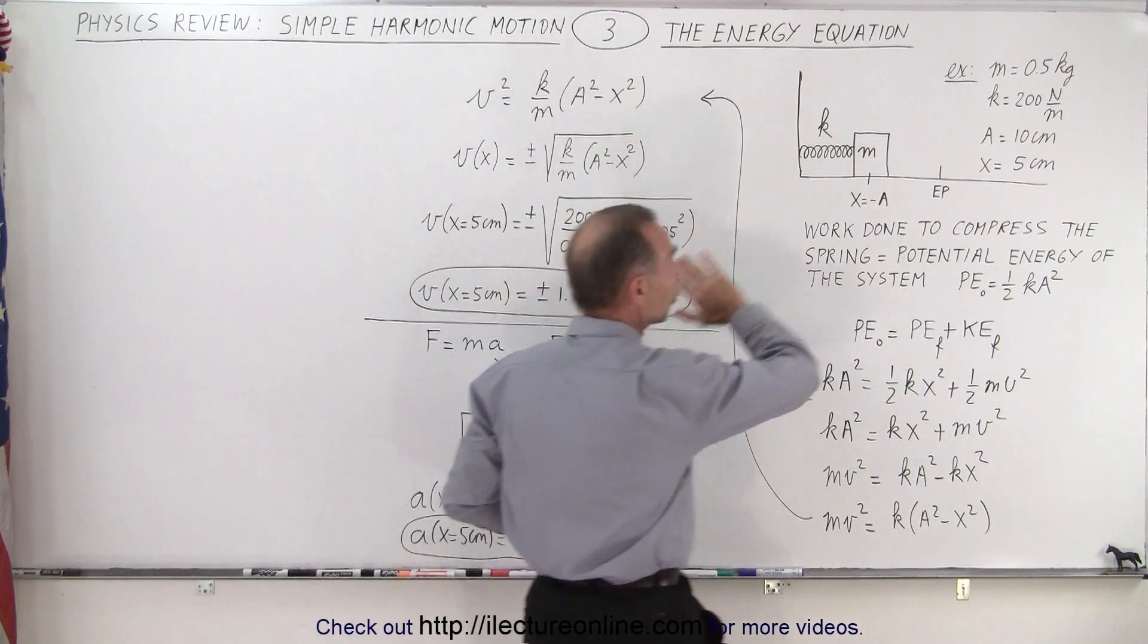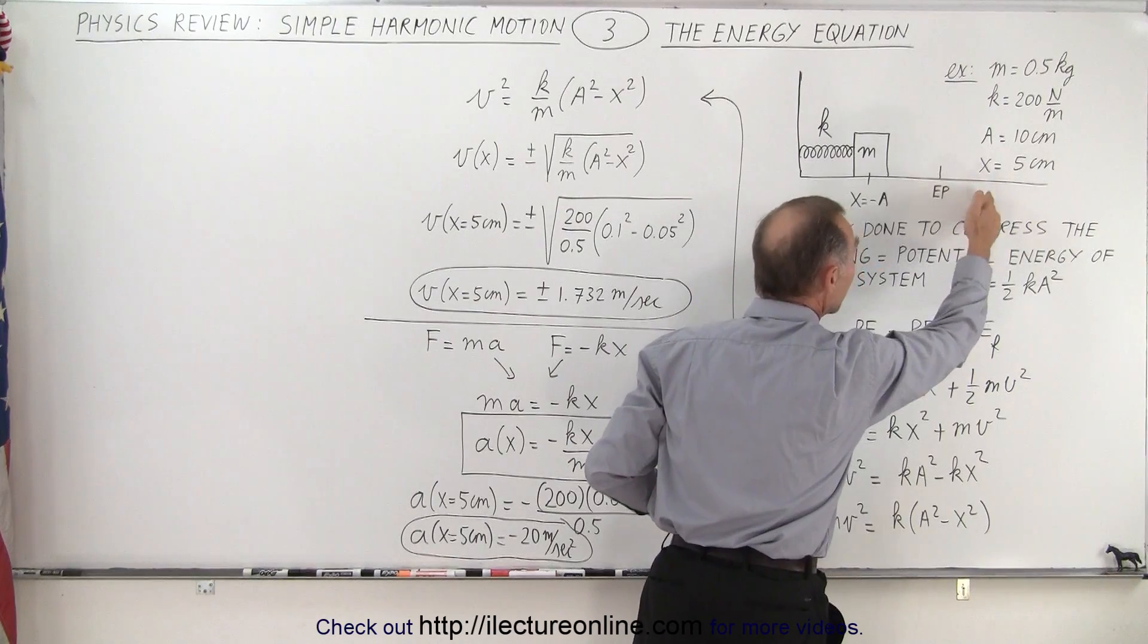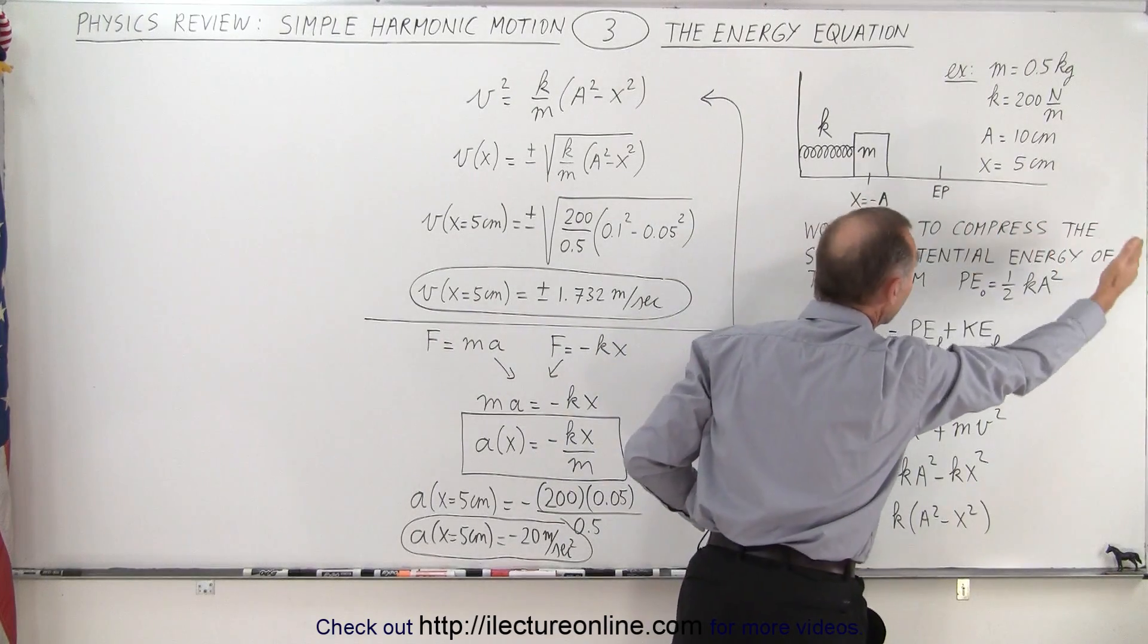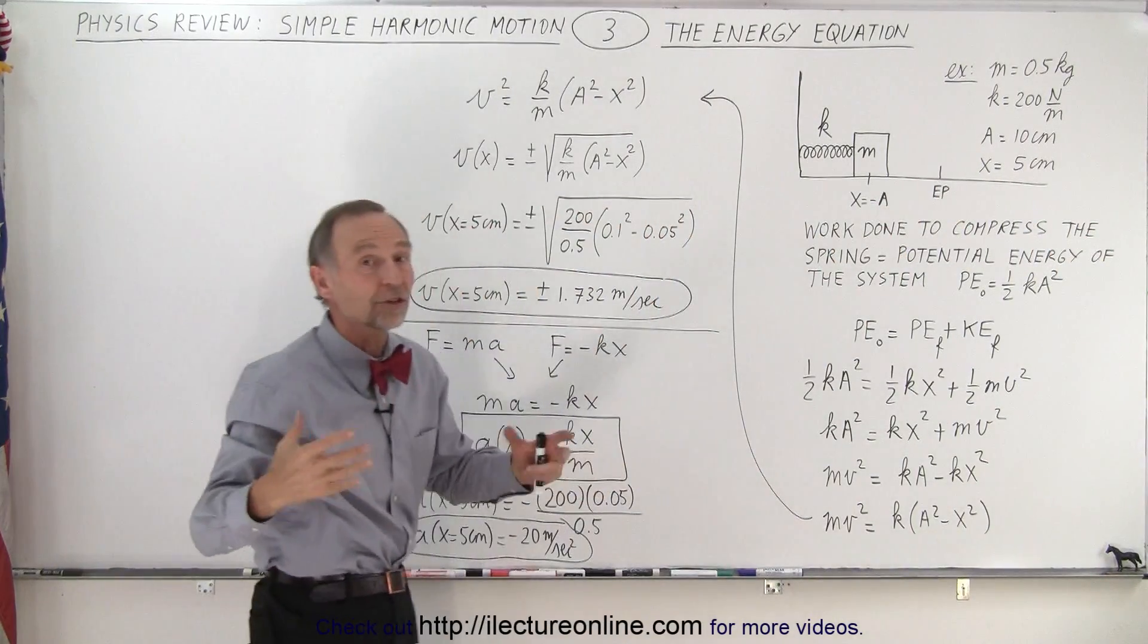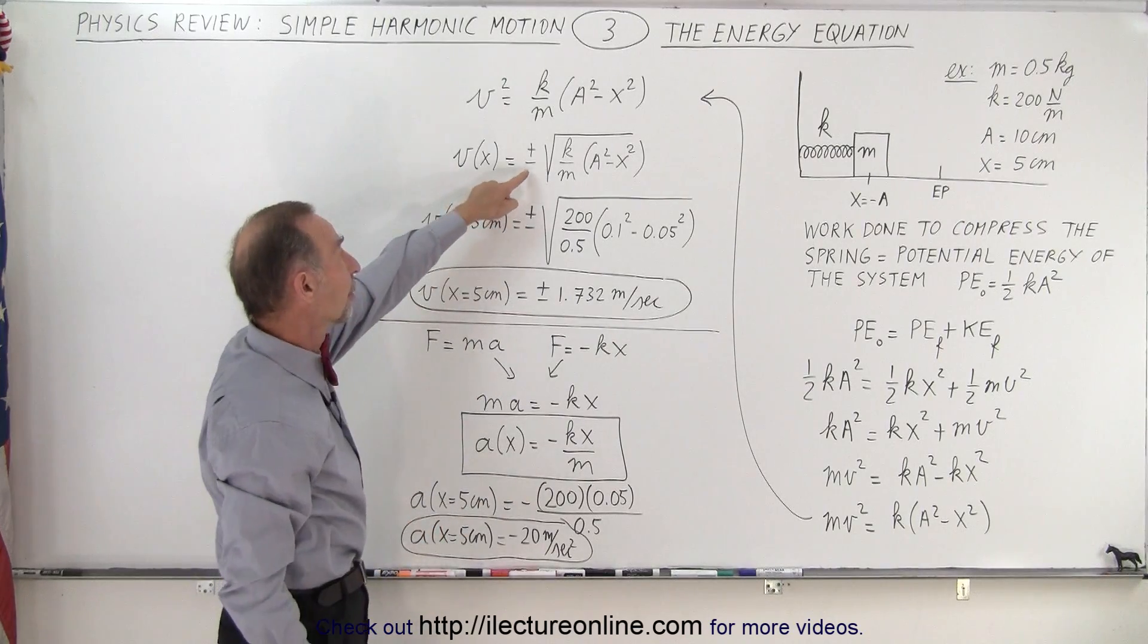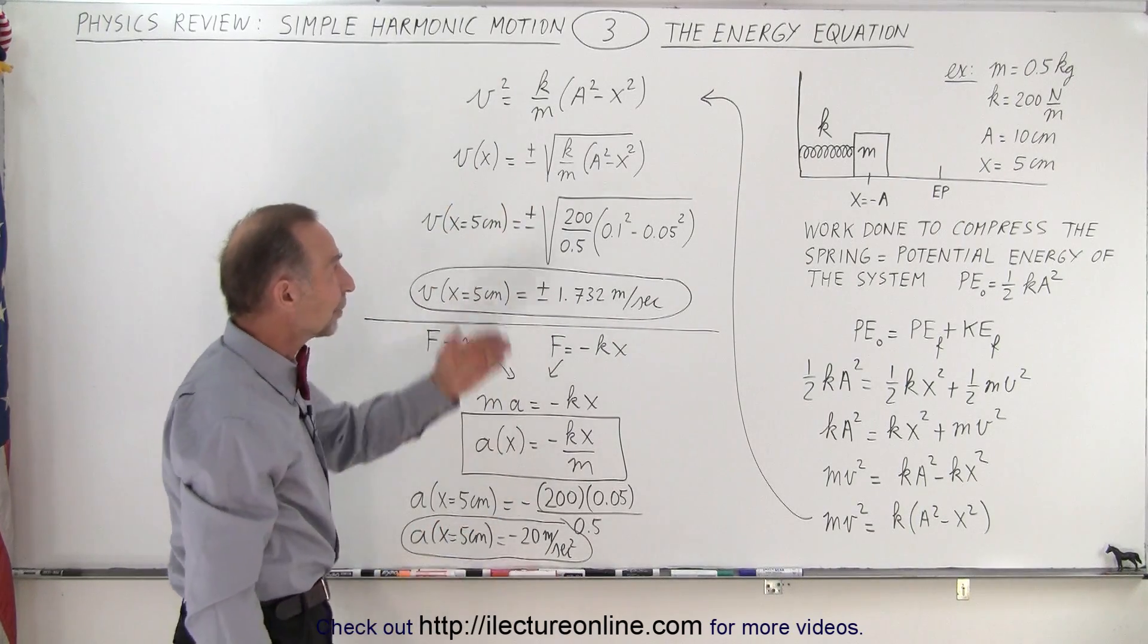Because when the object is to the right of the equilibrium point, it could be moving to the right or it could be moving to the left, so you don't know. It's an unknown, that's why we have to account for both possibilities.